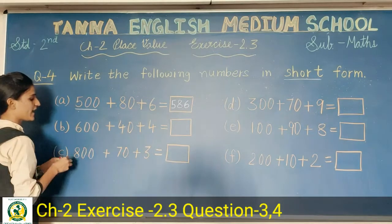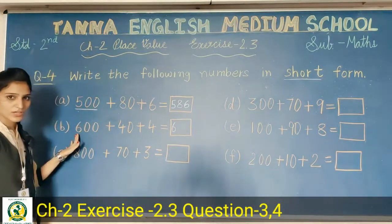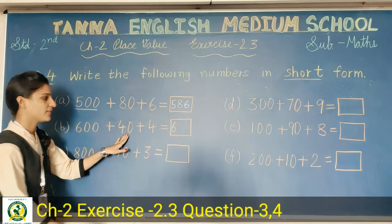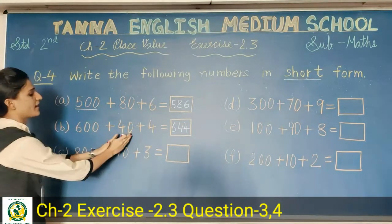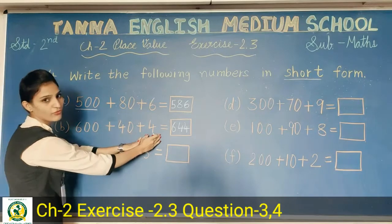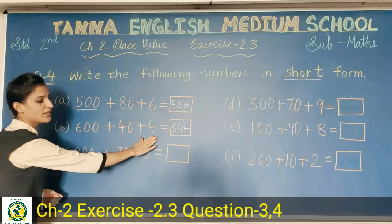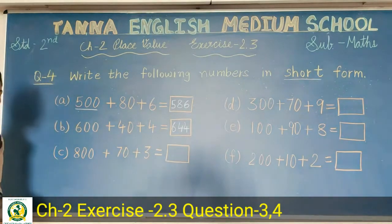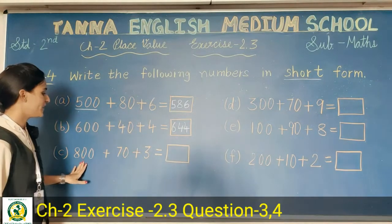Next: six hundred, forty, then four. Write them together. We have six hundred, so write six. Then we have four tens, so write four at tens place. Then four at ones place — so six hundred and forty-four. Write the number just as you say it: six hundred and forty-four.